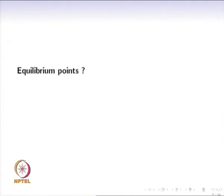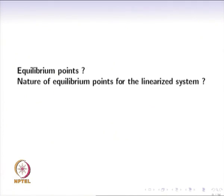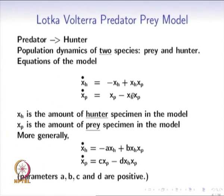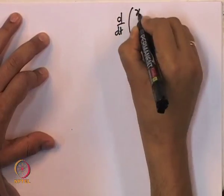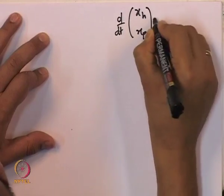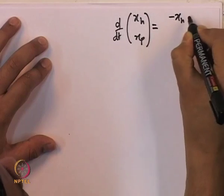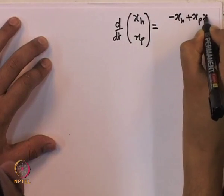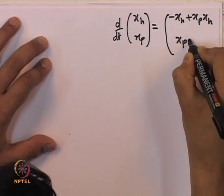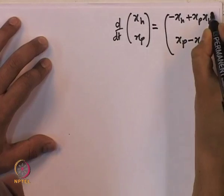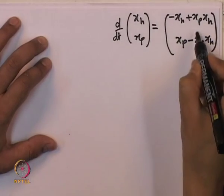The questions we can ask for this model are: what are the equilibrium points, what is the nature of the equilibrium point of the linearized system, and are there periodic orbits? Let us find the equilibrium points. We set d/dt of (xh, xp) equal to zero, so f1(xh, xp) = 0 and f2(xh, xp) = 0.